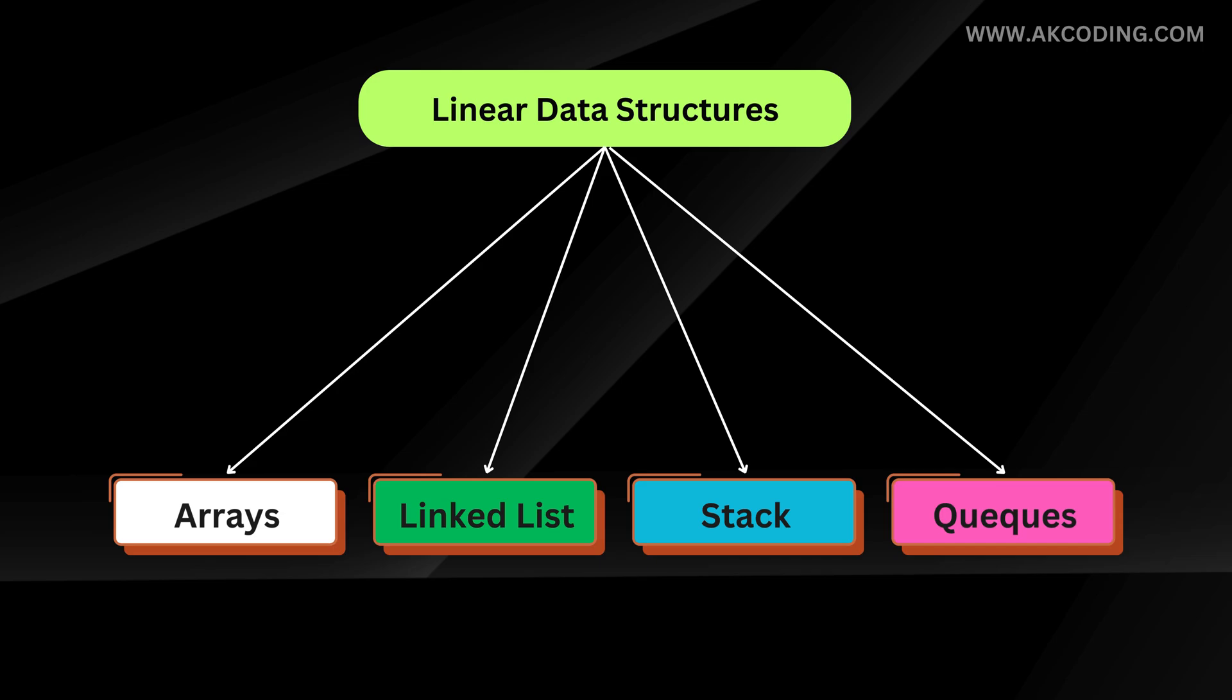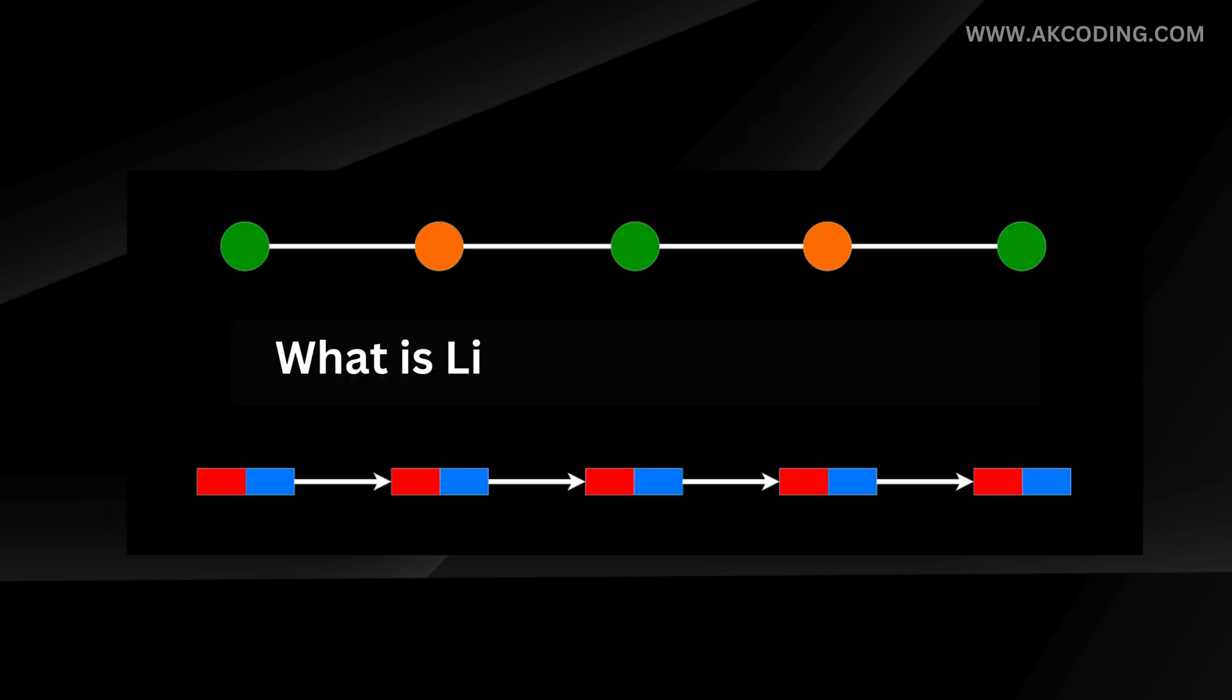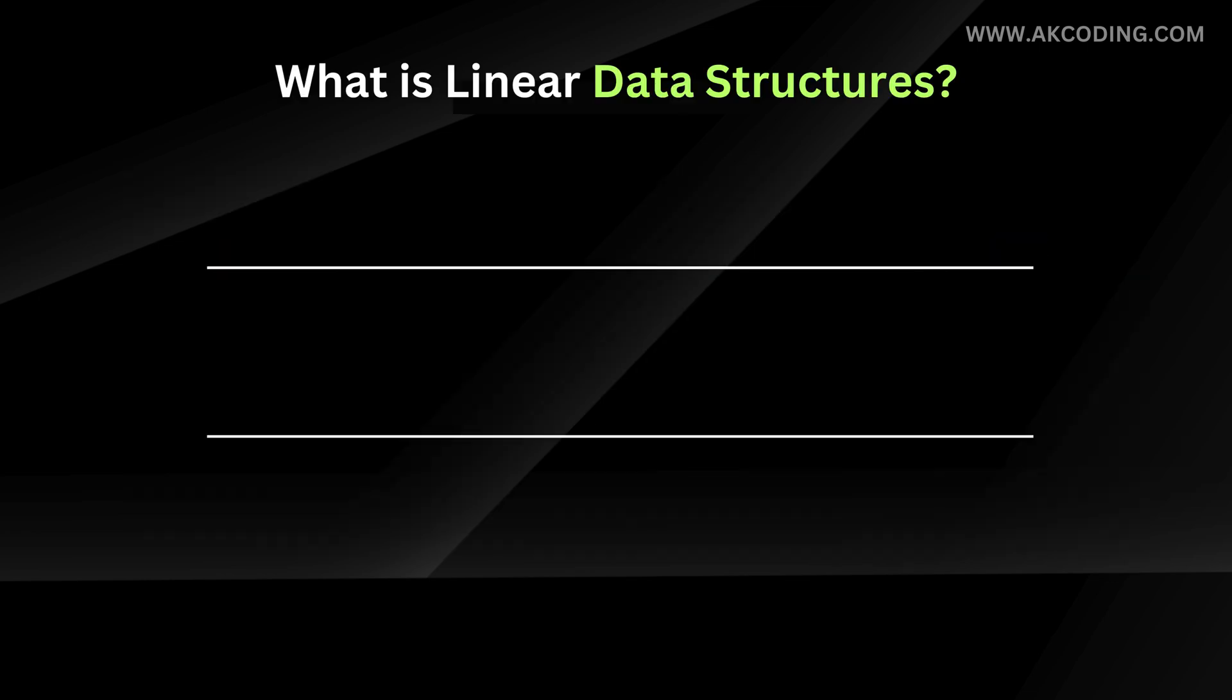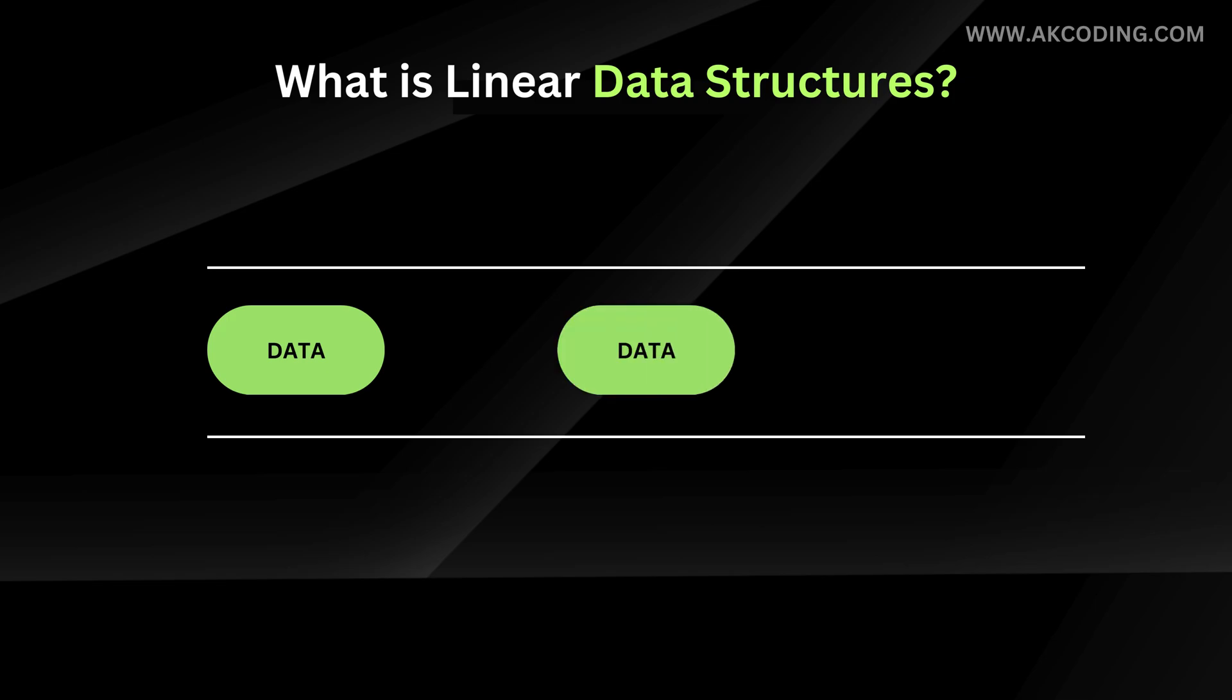So let's get started. What is a linear data structure? Linear data structures are arrangements of data elements in a sequential manner where each element connects to its predecessor and successor in a linear sequence. These structures facilitate straightforward traversal from one element to the next.